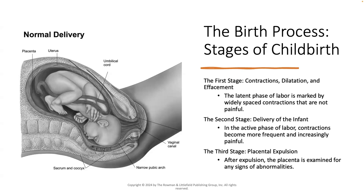The third stage is the placental expulsion. After the baby has been delivered, the placenta has to be delivered as well. The placenta is delivered about 15 minutes after birth — this varies by person — and is examined for any signs of abnormalities. The placenta encases the fetus inside the uterus, and the umbilical cord is attached to the placenta, providing nutrients for the baby.